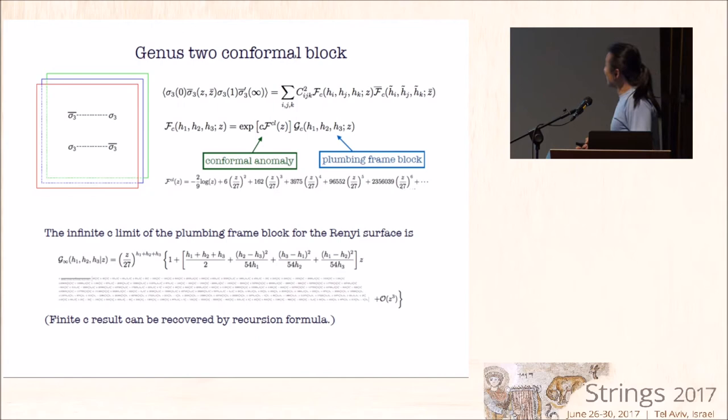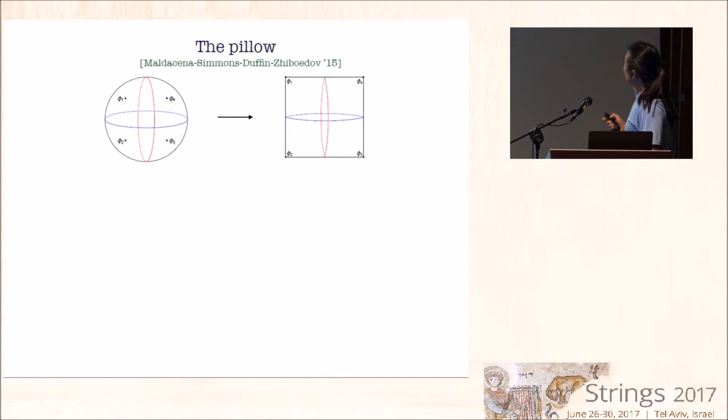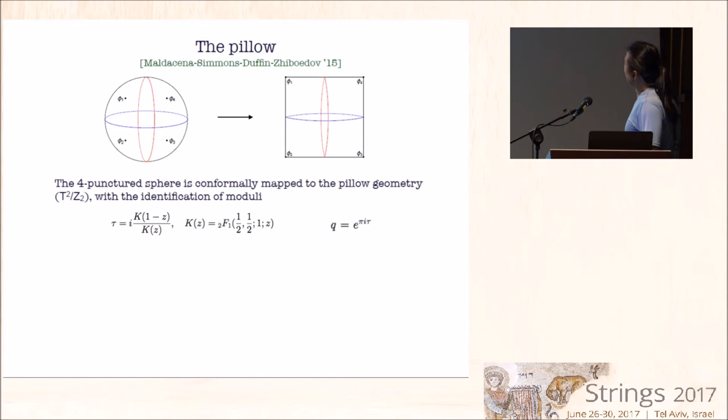Now there's another way to understand this rainy surface conformal block using the pillow geometry which was explained nicely in this beautiful paper by Maldacena, Simmons-Duffin, and Giribet which was already mentioned several times today. There's a conformal transformation going from the four puncture sphere to this pillow by kind of straightening out the four edges putting the operator on the edges. This pillow is really just T2 mod Z2, topologically the same as the sphere with the four operator insertion at the corners. And the modulus of this torus is related to the cross ratio of these four points on the sphere through this map, and the cube, which is e to the i pi tau, is usually called the elliptic nome. This was in fact already used by Zamolodchikov back in the 80s in writing some of the recursion formulas.